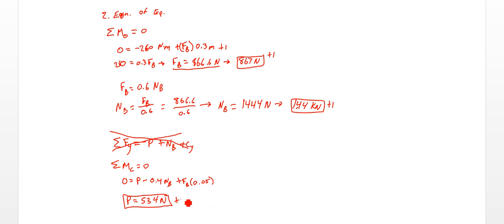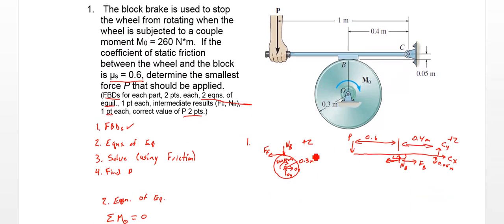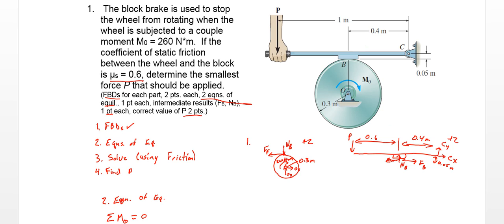So let's count up the points: 2 for the wheel FBD, 2 for the brake FBD, 1 for the moment equilibrium equation, 1 for the NB intermediate result, and 2 for the final value of P — that gets us to 10. So we need to apply 534 N, 1 meter away, and that will generate enough friction to keep the wheel from turning even when a 260 newton meter moment is applied.